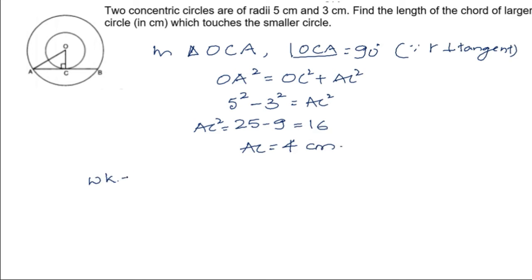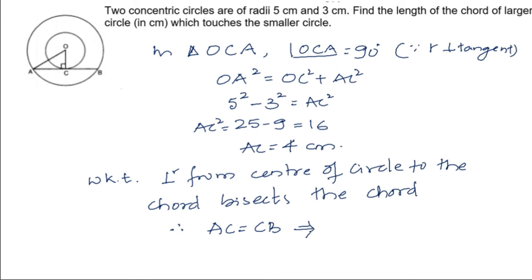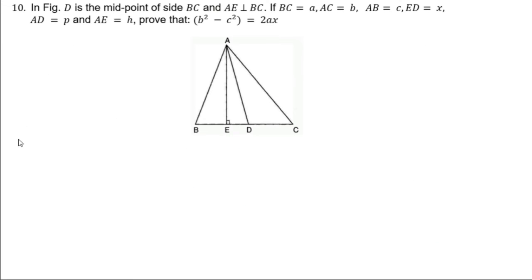We know that the perpendicular from the center of a circle to a chord bisects the chord. Therefore the length of AC equals the length of CB. This implies the length of AB = 2 × 4 = 8 centimeters. So we have found the length of the chord, which is also a tangent to the inner circle.